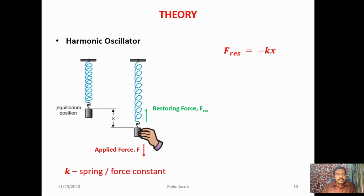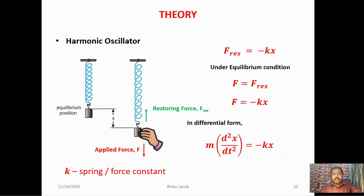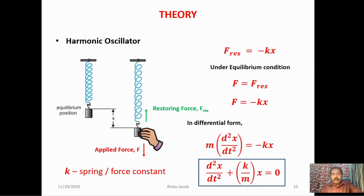The restoring force is F_restore = -KX. In equilibrium, F = -KX. By Newton's second law, force equals mass times acceleration, so in differential form: M·(d²X/dt²) = -KX. Dividing throughout by M and rearranging, we get d²X/dt² + (K/M)·X = 0. This is the differential equation for a body executing simple harmonic motion.